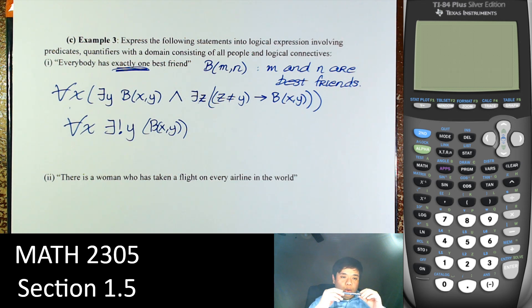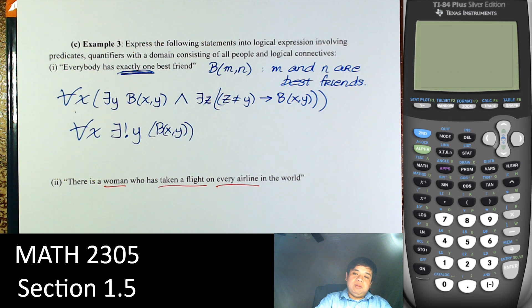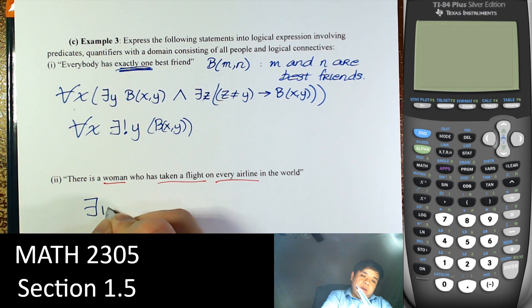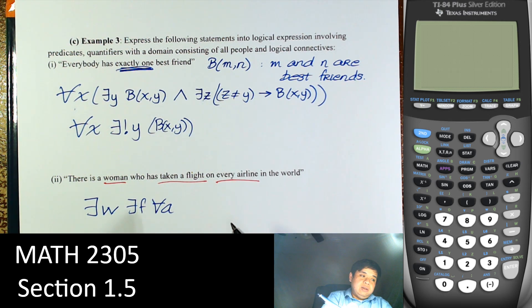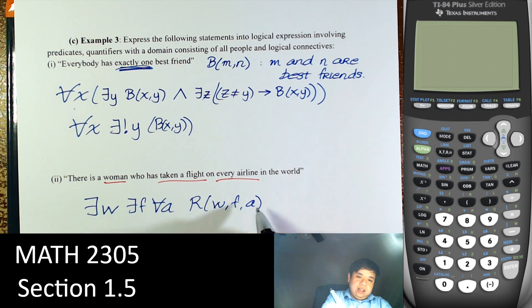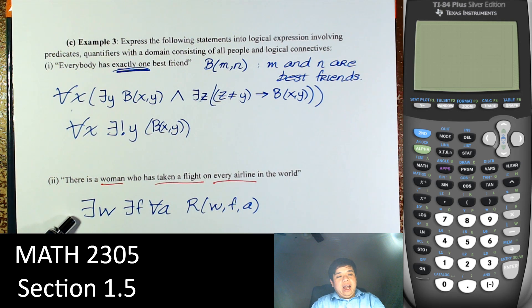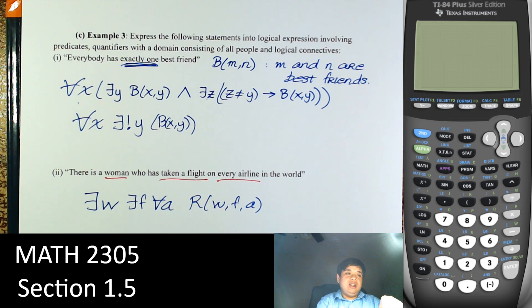There is a woman who takes a flight on every airline in the world. There are three variables here: a woman, a flight, and every airline. So we say: there exists a woman w, such that there exists a flight f, on every airline a — and we state the relation between w, f, and a. There exists a woman who takes a flight such that there exists a flight on every airline, with that relation. It is easier to write it that way.